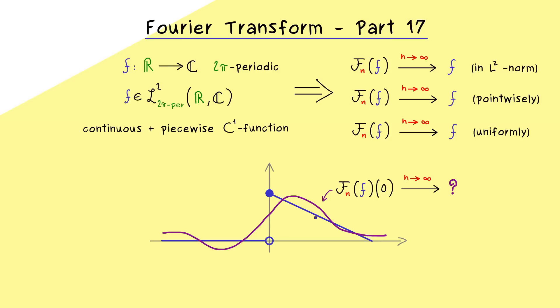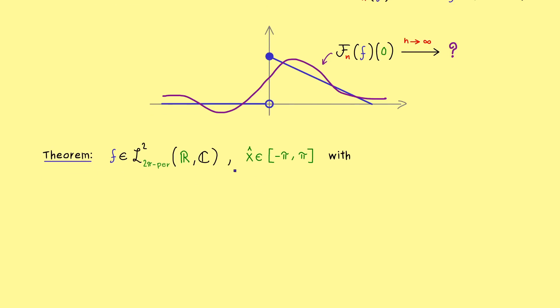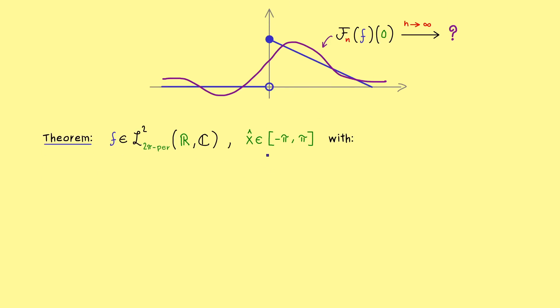So the question is, does this limit exist and what is the value of it? It turns out that we can answer that in a very general setting. Roughly speaking, the function f just has to be nice enough at this given point. This means we don't need such a general property for the whole function f because we can consider each point separately. So let's fix such a point and let's call it x-hat. Since we are 2π periodic, we can take it from the interval minus π to π. Now our function f has to satisfy four conditions at this given point x-hat.